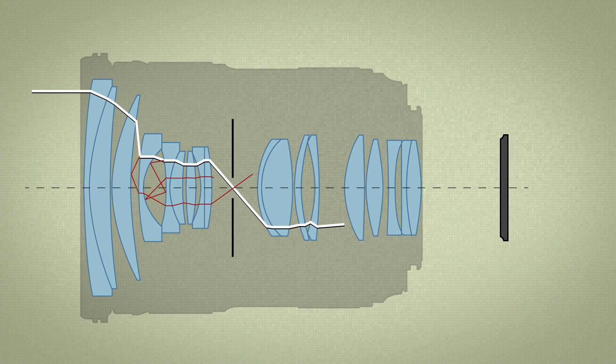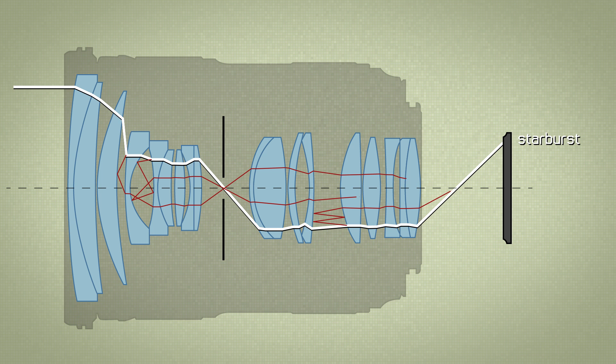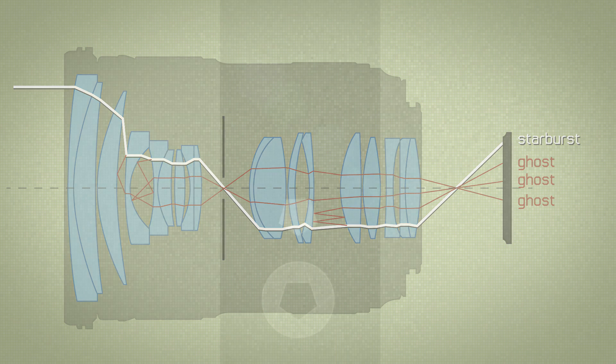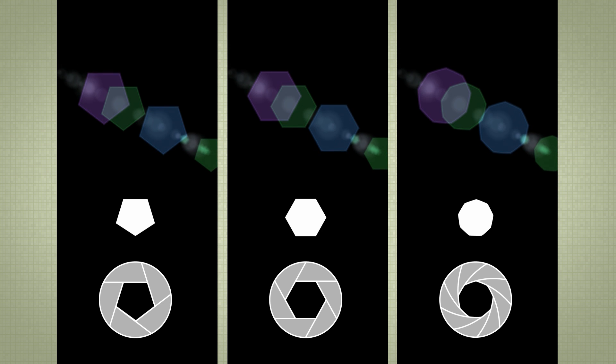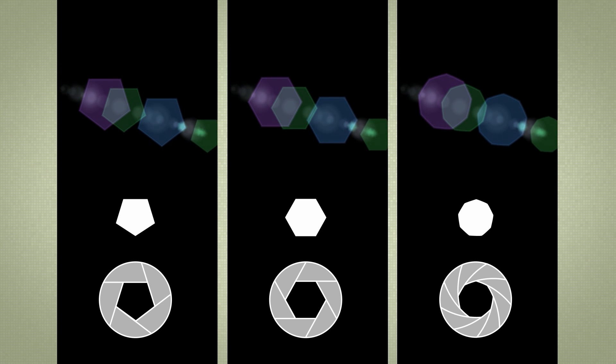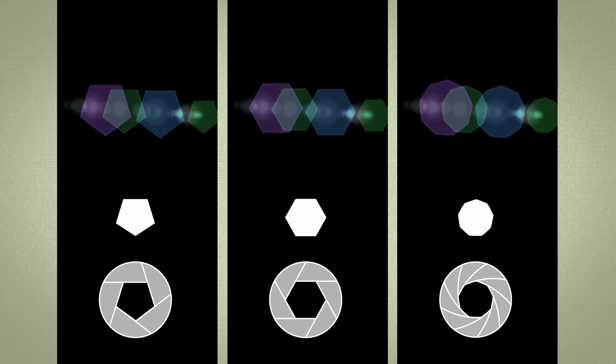Then those big colored blobs that appear seemingly at random are called ghosts. They are reflections of the strong light inside the lens that just bounced around a bit. Their silhouette is defined by the shape of the aperture. So a five-bladed aperture produces only pentagon-shaped ghosts, for example.